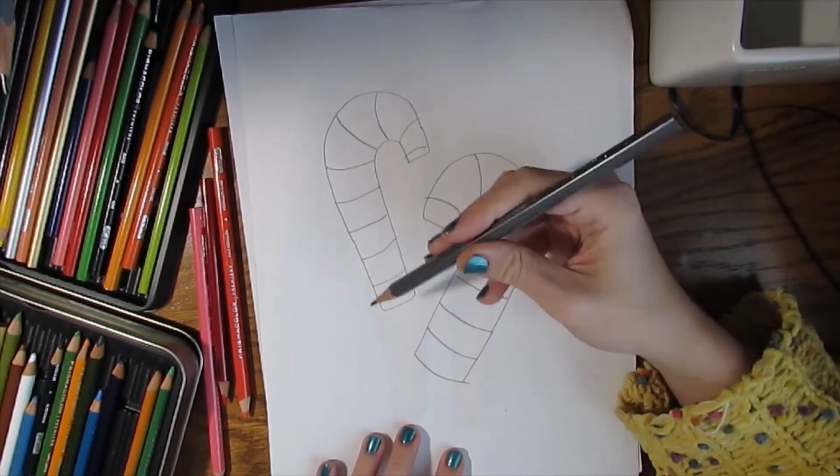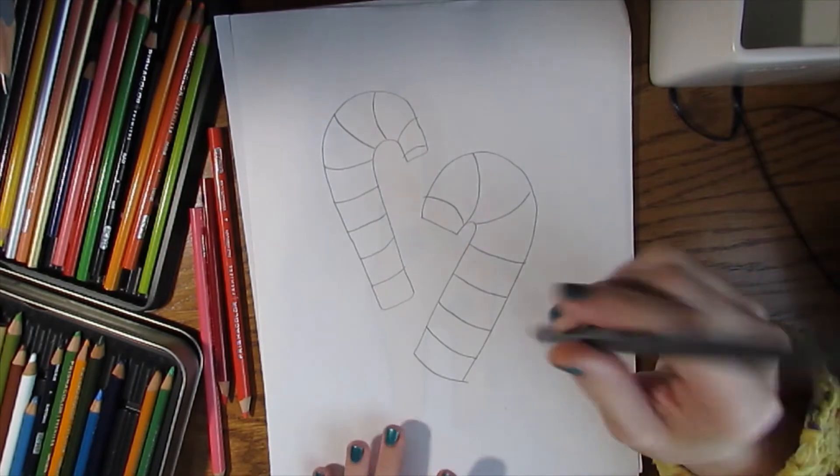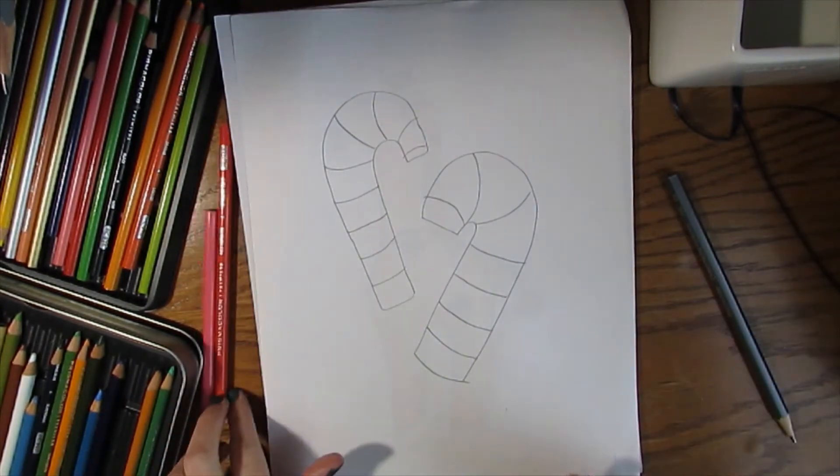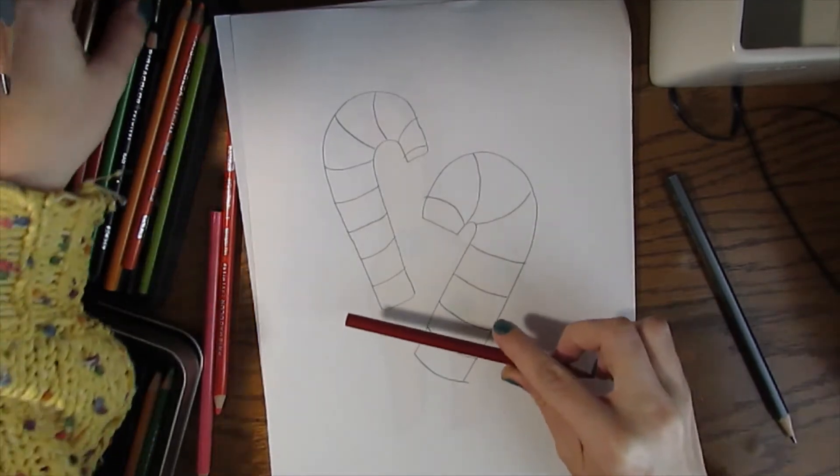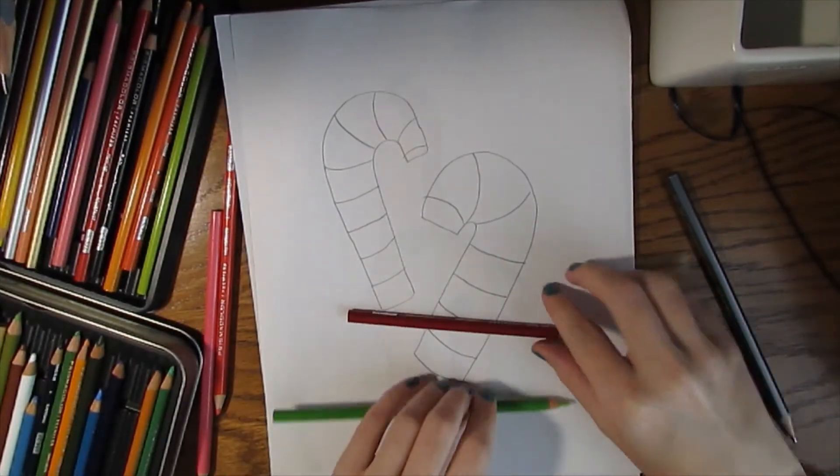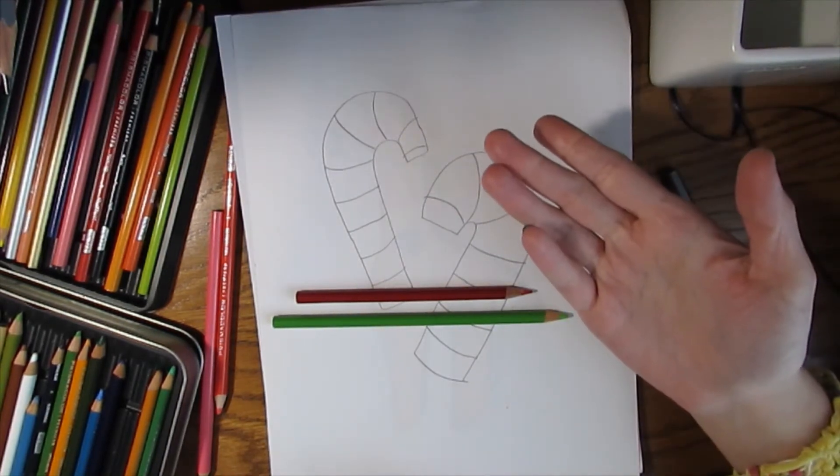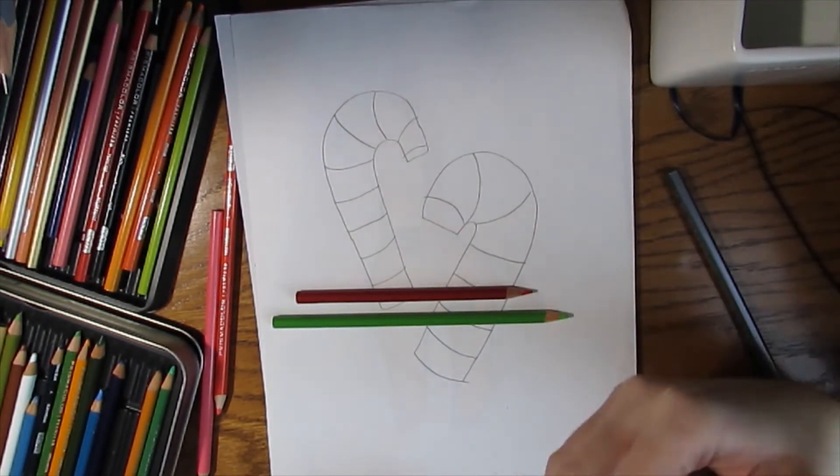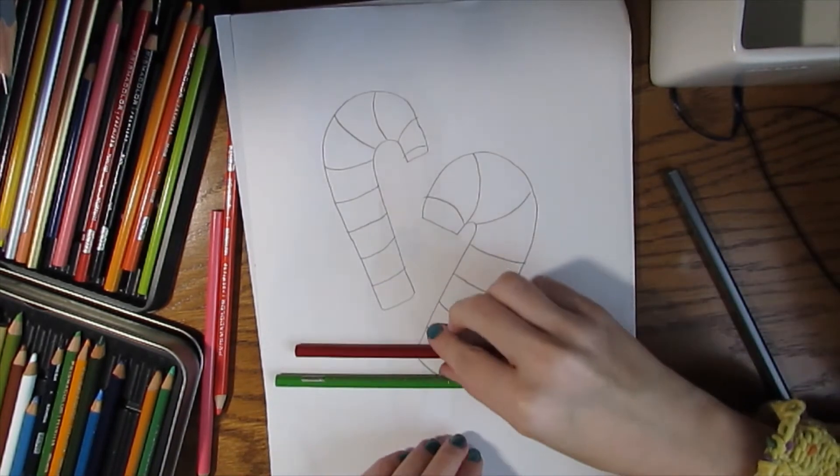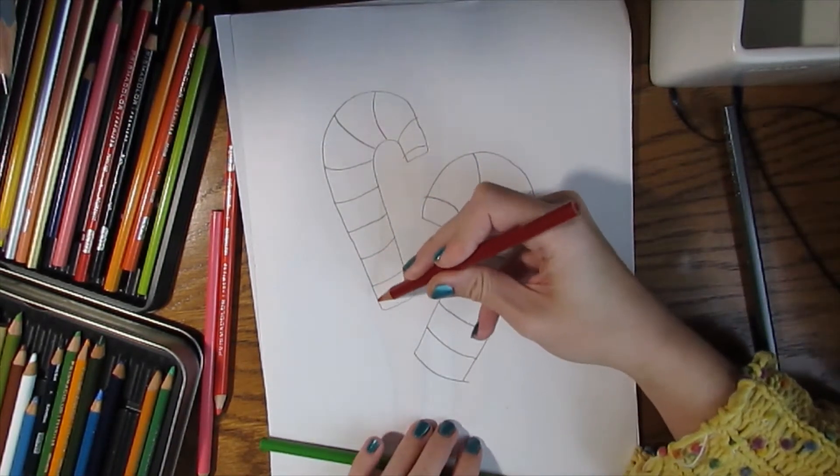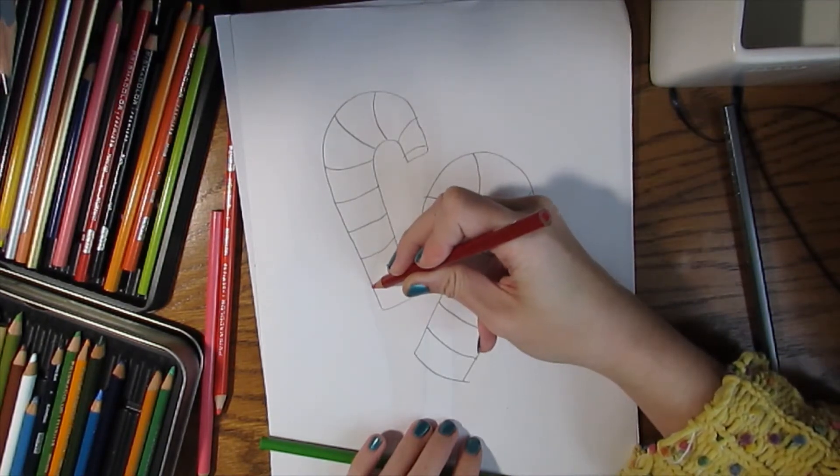I'm gonna start by doing a red and green candy cane and the way to do this is so easy. If you did the optical illusion project with me, it's just like our optical illusion project. We're gonna start at one end of our stripes.